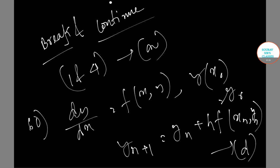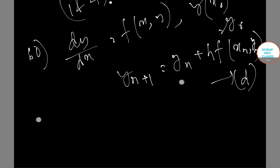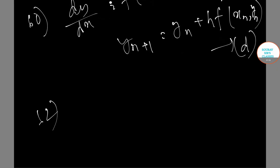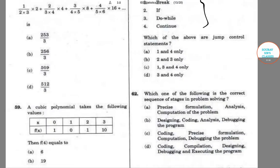Now I'll be doing question number 62. Question 62 has a question on stages of problem solving. Which of the following is the correct sequence of stages of problem solving? Here we have precise formulation, analysis, computation of the problem and many more options, so we will check which is the correct one.